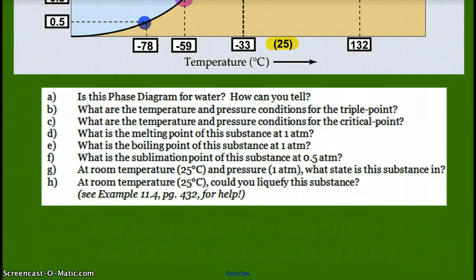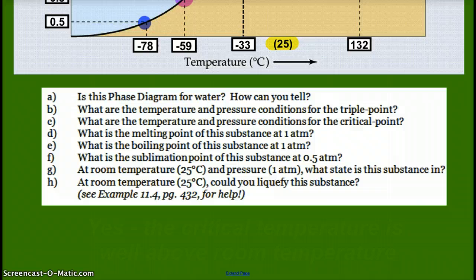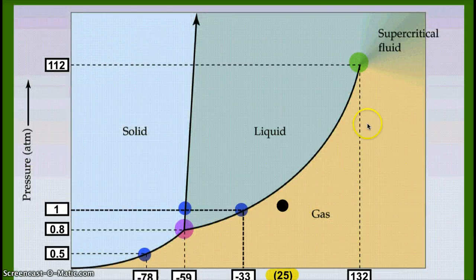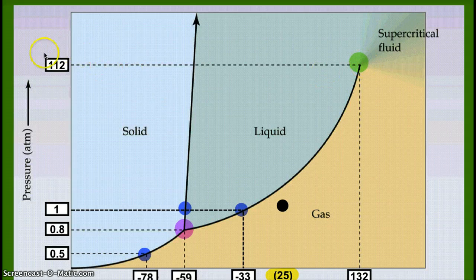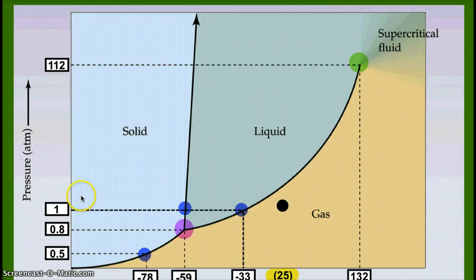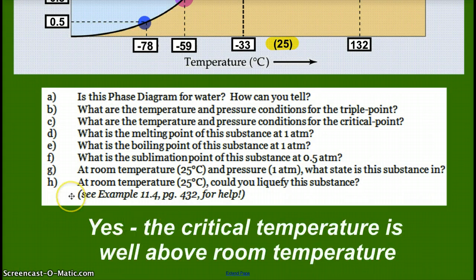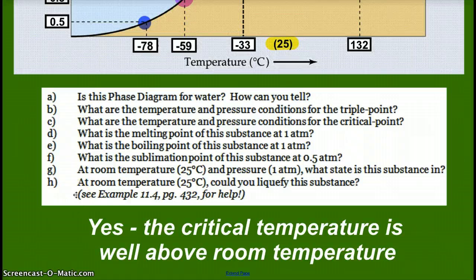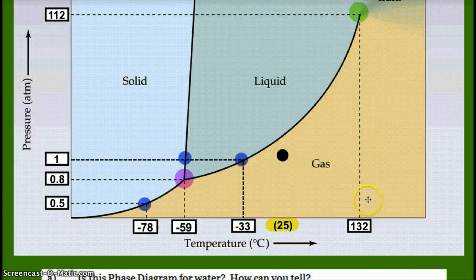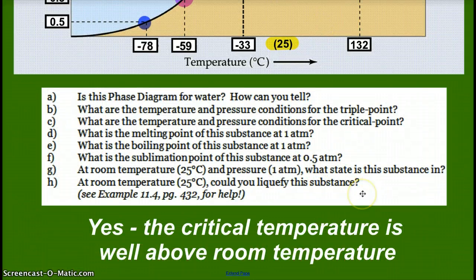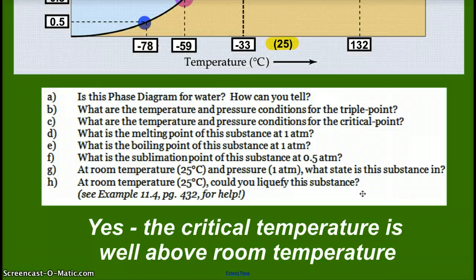And then we have our last question. At room temperature, 25 degrees Celsius, could we liquefy this substance? And it says, see example, page 432. That's for my textbook, my student's textbook. And it has to do with where the critical point is. Our critical point here is at a way higher pressure than one atmosphere. Because of that, we can definitely say that, yes, the critical pressure is well above room pressure, as well as the critical temperature. Our critical temperature of 132 is well above 25. So, for both of those reasons, then we can definitely liquefy the substance. If a substance's critical point is below room temperature, below room pressure, then you're not going to be able to liquefy that substance just by applying pressure. You're going to have to change temperature and pressure conditions in order to get it to liquefy.